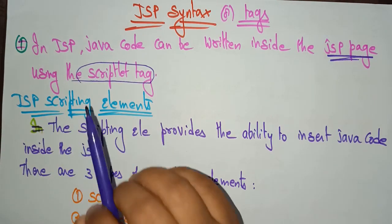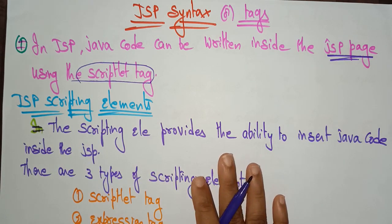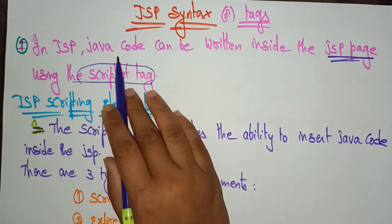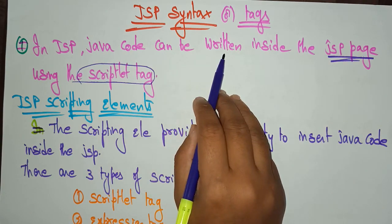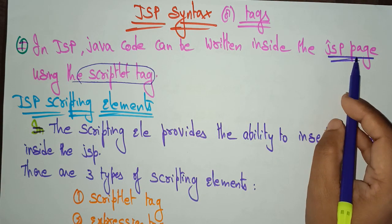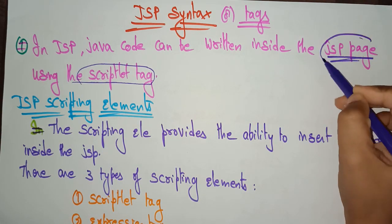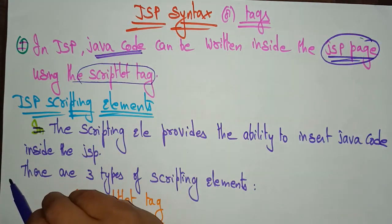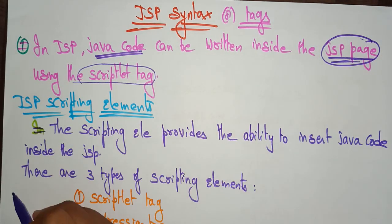With the help of tags, you can create a JSP. Inside the JSP files, you can write Java code, and that can be called from the HTML program.